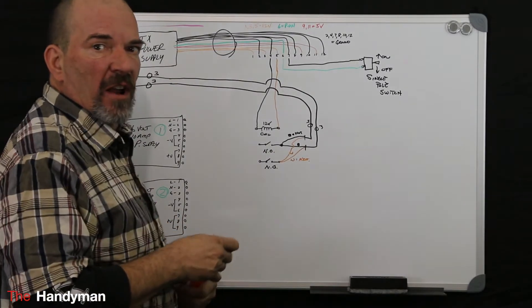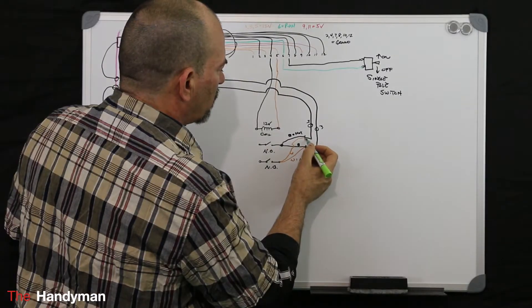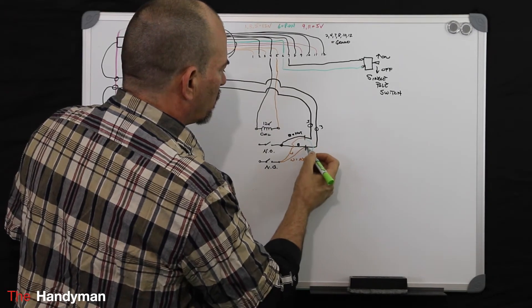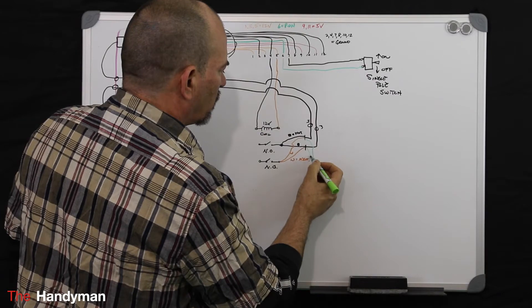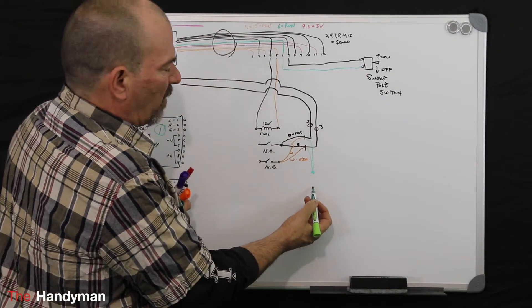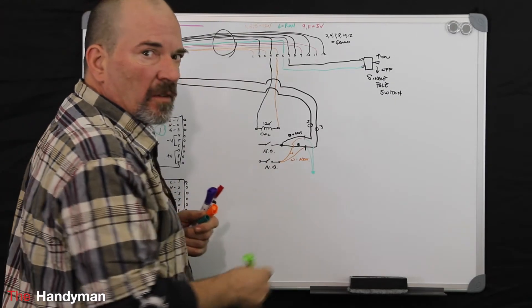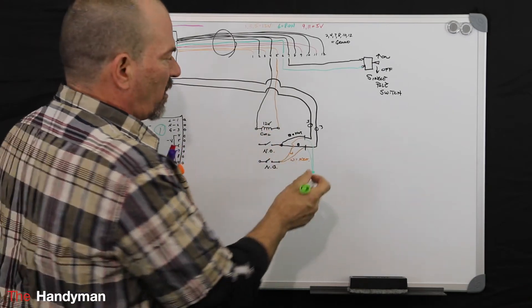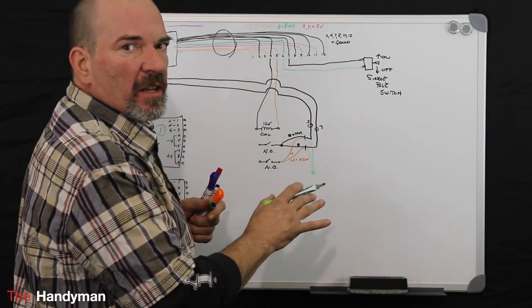Then you're going to take your grounds out of those cables. You're going to ground those to your metal case with a screw if you're using metal. If you're using plastic in a metal case, I would still run a ground somewhere to the metal of the case.